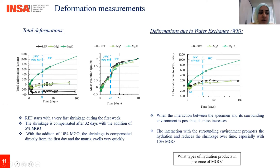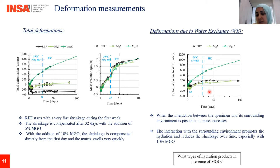Similarly, for the total deformation, you can see that the reference starts with very fast shrinkage during the first week and tends to vary around a constant value after this stage. However, this shrinkage is compensated after 32 days when using 5% of MgO, and then the matrix starts to swell. When using 10% of MgO, the shrinkage is compensated directly from the first day and the matrix swells very fast after this stage. In parallel, the specimen mass increases with greater interaction between the specimen and its surrounding environment, and this process promotes hydration and reduces shrinkage, and is especially promoted when using MgO — particularly at 10%.